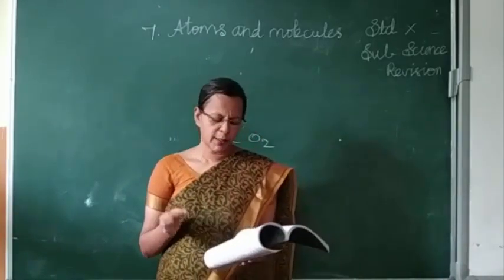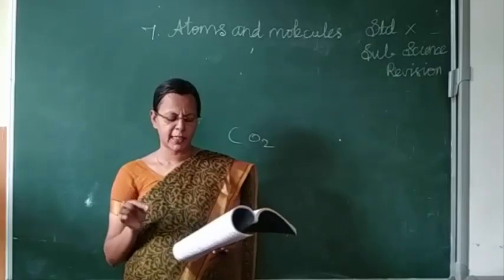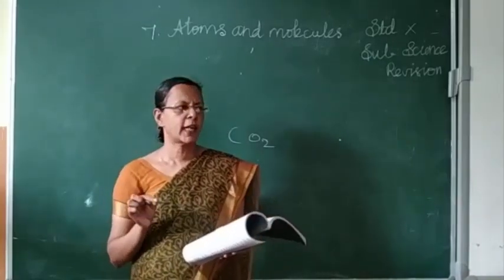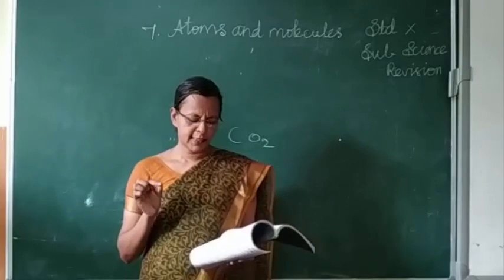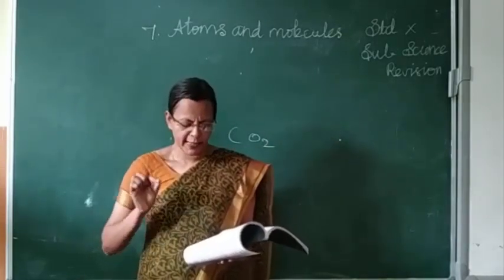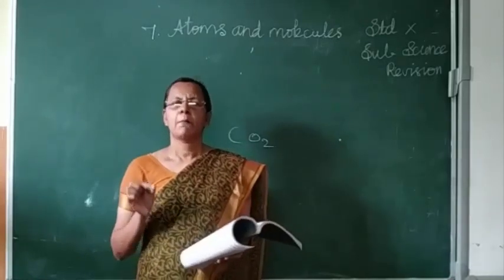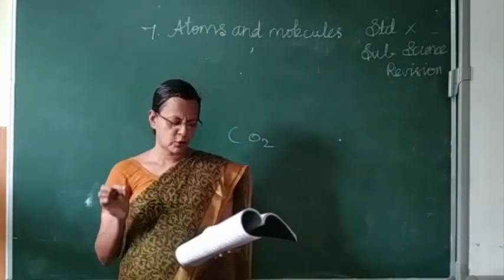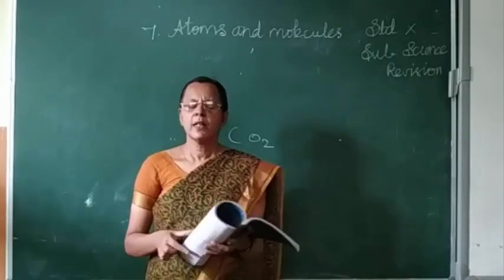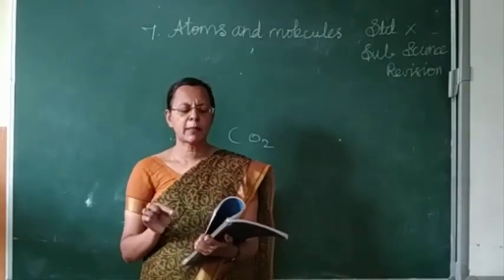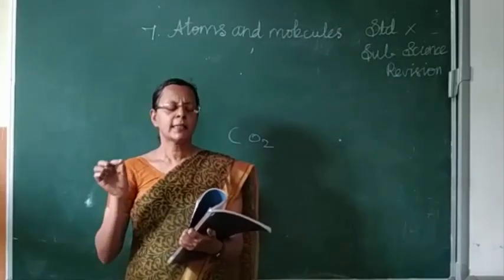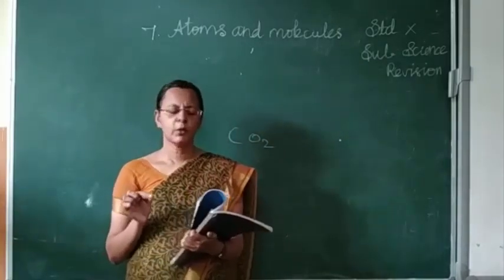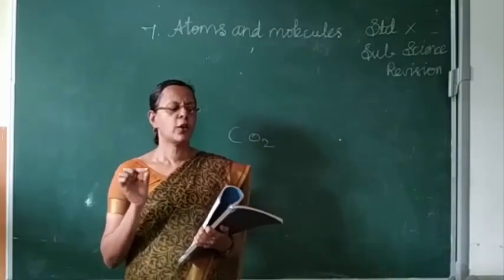Third question: Atoms of one element can be transmitted into atoms of another element by artificial transmutation. Fourth: The sum of the number of protons and neutrons of an atom is called the mass number. Fifth: Relative atomic mass is otherwise known as standard atomic weight. Sixth: The average atomic mass of hydrogen is 1.008 AMU.